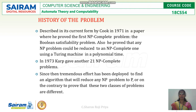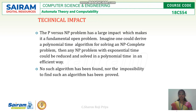This NP-complete problem can be reduced using a Turing machine in polynomial time. The P versus NP problem has a large impact as a fundamental open problem. If one could derive a polynomial time algorithm for solving an NP-complete problem, then any problem with exponential time could be reduced and solved in polynomial time efficiently.